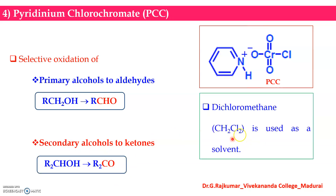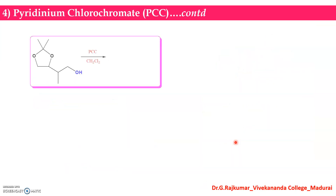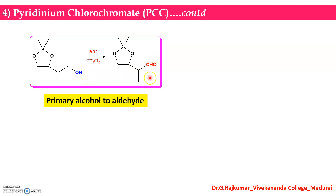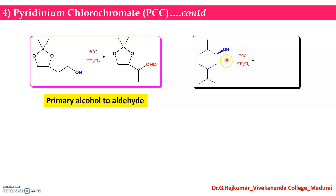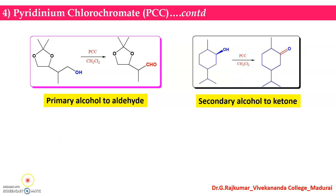The commonly used solvent is dichloromethane (CH2Cl2, DCM). A primary hydroxy group in the presence of pyridinium chlorochromate and DCM can be oxidized into an aldehyde. A secondary alcohol group can be oxidized into a ketone in the presence of PCC.